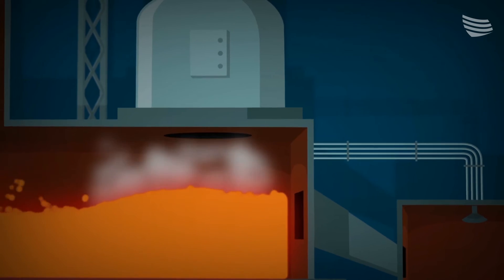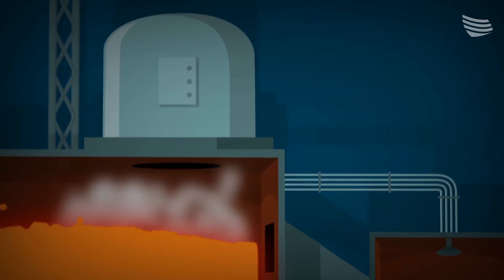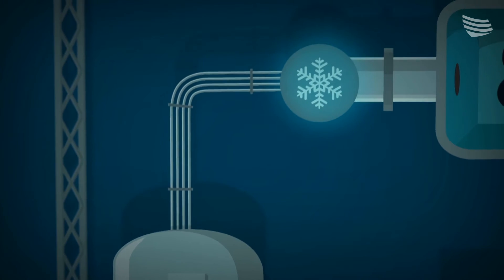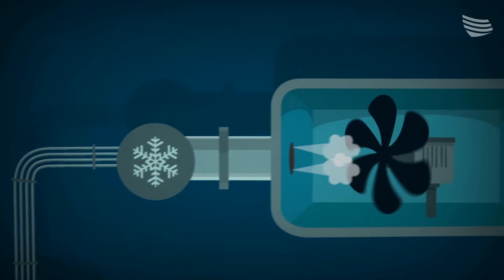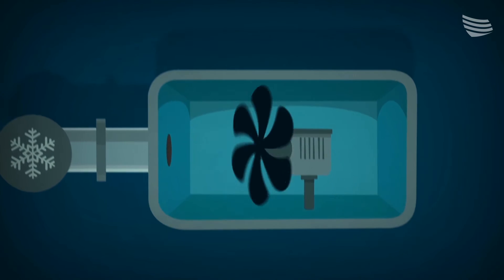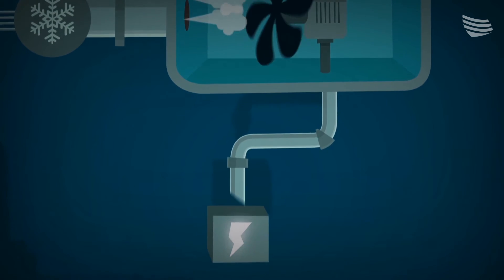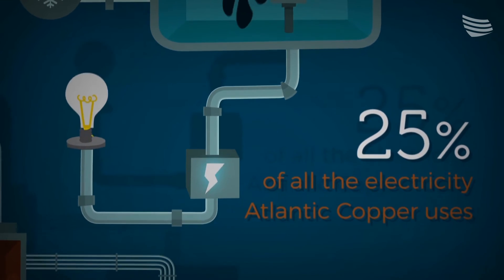Smelting produces gases containing sulfur dioxide. These gases are drawn off and cooled, creating high-pressure steam. The steam is used to power turbines that spin so fast, they actually make 25% of all the electricity Atlantic Copper uses.